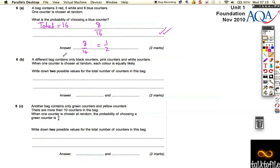A different bag contains only black counters, pink counters, and white counters. When one counter is chosen at random, each colour is equally likely. Write down two possible values for the total number of counters in this bag.